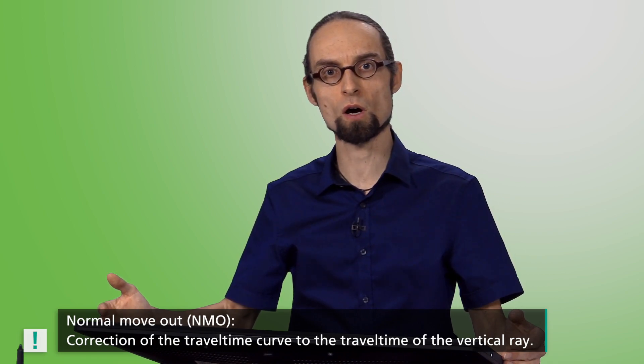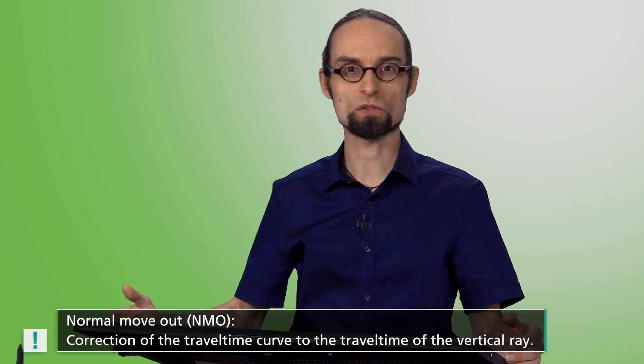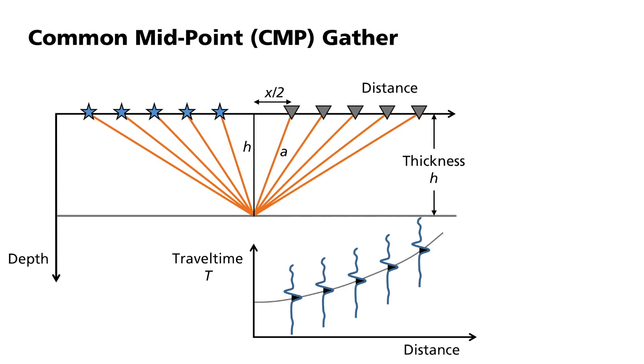This corrects the travel time curve to the travel time of the perpendicular and thus also to the different offset distances. The NMO initiates a temporal displacement of the seismogram by a time delta t. As a result, the signals of the reflection arrive at the same time as that of the perpendicular. The NMO correction, delta t, depends on the offset x and is derived from